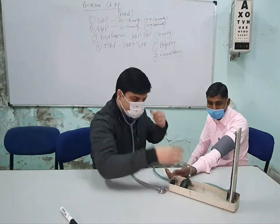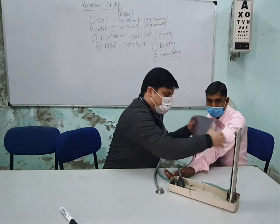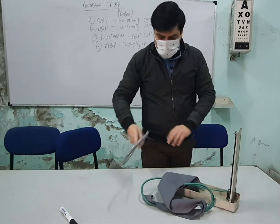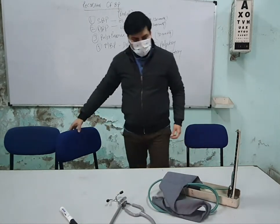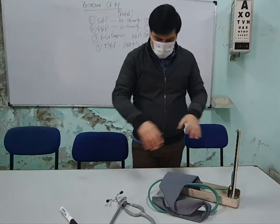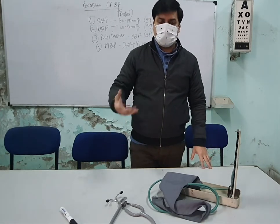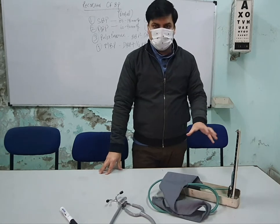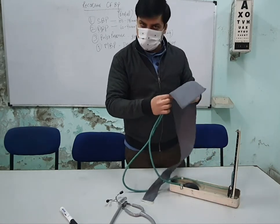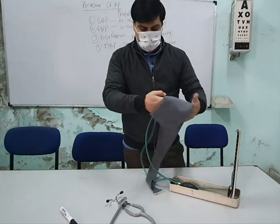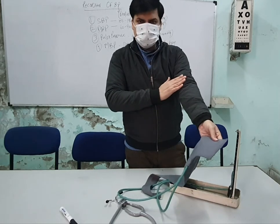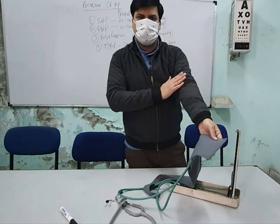Some important precautions: the person should be sitting comfortably and relaxed — not standing, not lying down, not excited or anxious, and the reading should not be taken immediately after physical exertion. The rubber tubings should be facing medially and positioned above the arm. The cuff should be firm enough that one finger can easily penetrate, and placed 2 to 3 centimeters above the cubital fossa.